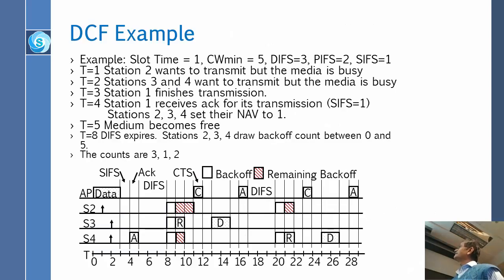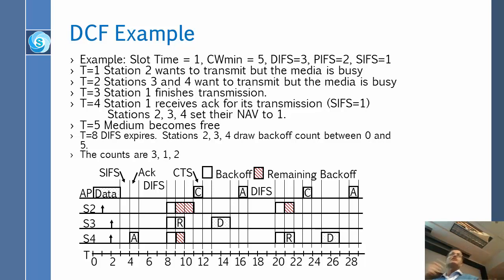Here is an example. Slot time is 1, CW min is 5, DIFS is 3, PIFS is 2, and CIFS is 1. This is just an example. In the exam, I will change the numbers and you have to work it out.